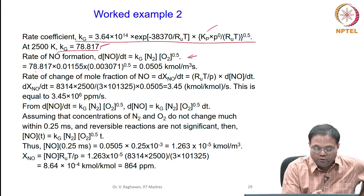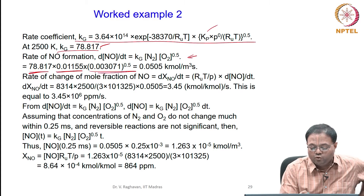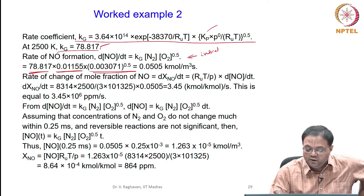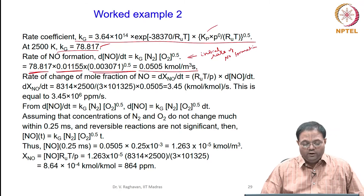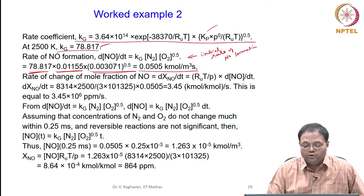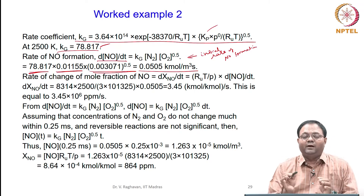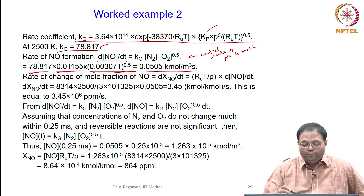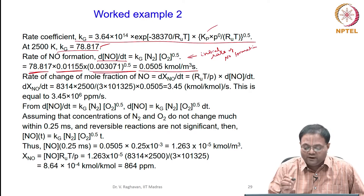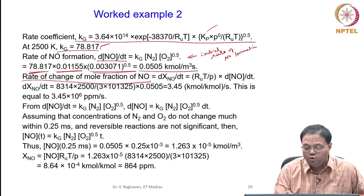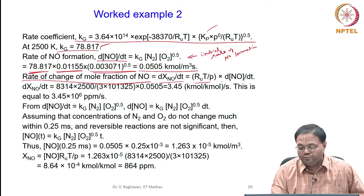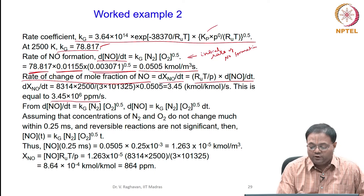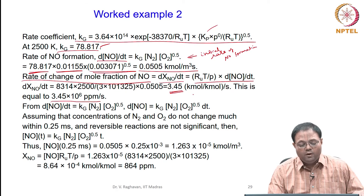The initial rate of NO formation, substituting initial concentrations of N₂ and O₂ to the power 0.5 into the rate equation, gives 0.0505 kmol/(m³·s). To convert to mole fraction per second, we compute dX_NO/dt equals (RuT/P) times d[NO]/dt, which gives 3.45 kmol of NO per kmol of mixture per second.